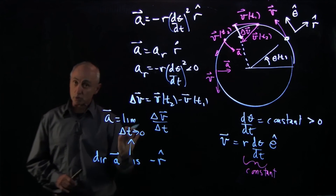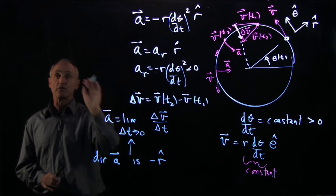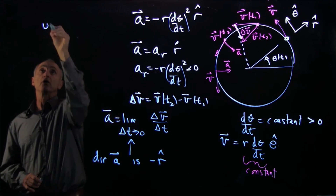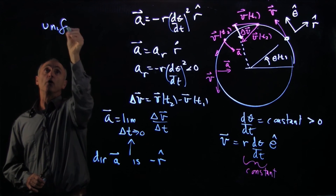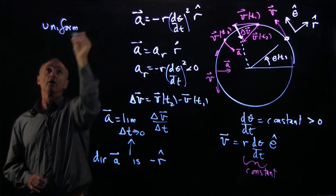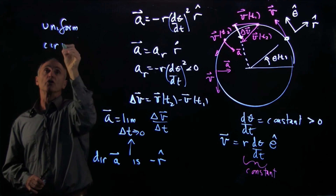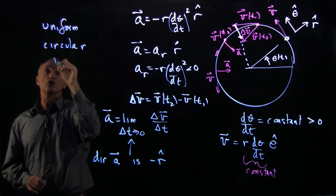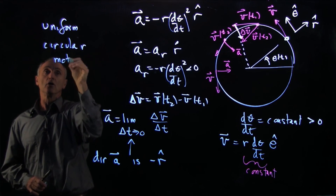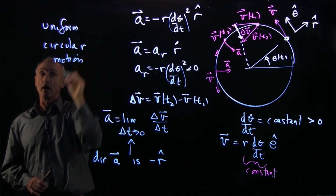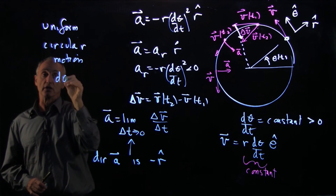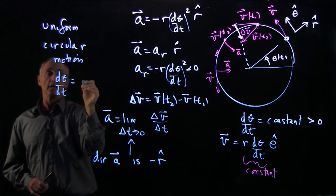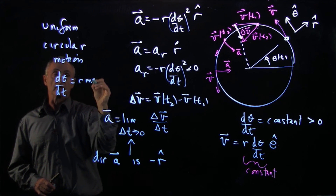Let's recall that this is the case for what we called uniform circular motion, which is defined by the condition that dθ/dt is a constant.